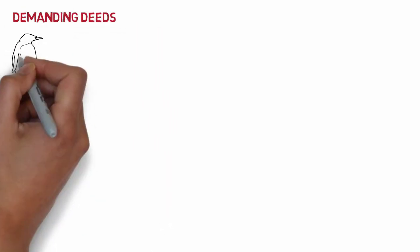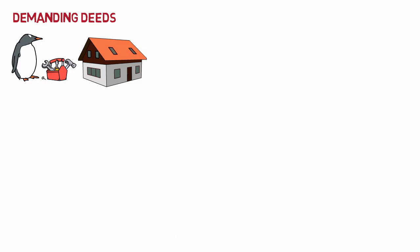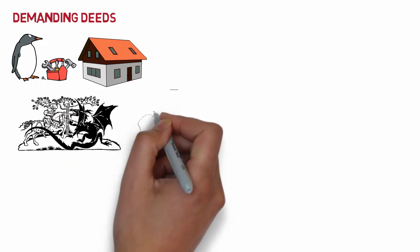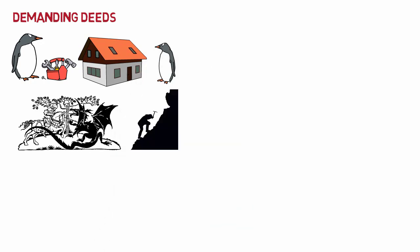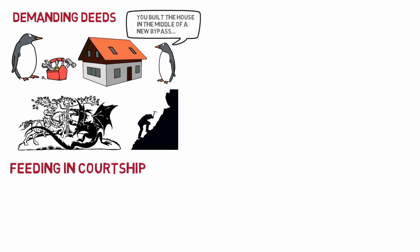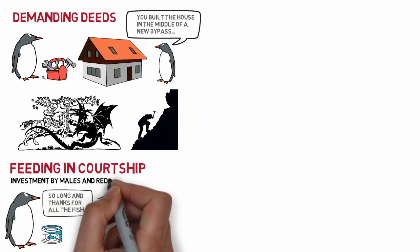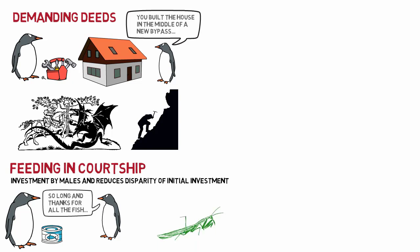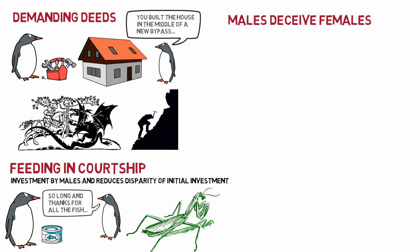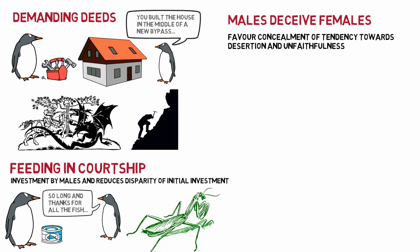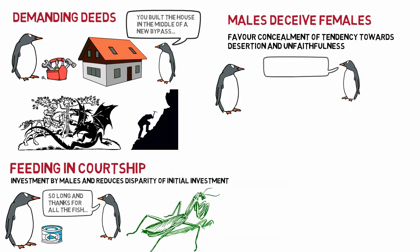Demanding prospective males to build a nest might be an effective strategy for the female to trap him. Females may also assign costly deeds — such as slaying a dragon or climbing a mountain — before consenting to copulation. However, females that impose a less arduous but more useful task will have an advantage over those demanding pointless labors of love. In courtship, the male can also feed the female — in birds, this is regarded as a regression to juvenile behavior on the part of the female — reducing the disparity in initial investment between the two parents. In the case of the male mantis, he sacrifices himself to the larger female during mating for the benefit of his children. However, males who can deceive females by concealing a tendency towards desertion and unfaithfulness have a strong advantage, and genes for effective deception will be favored.